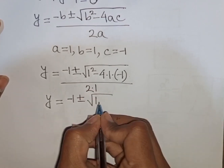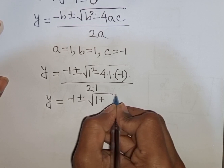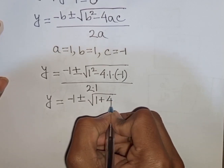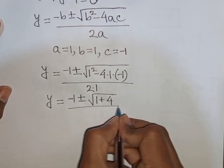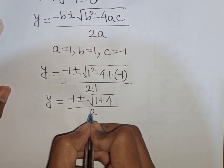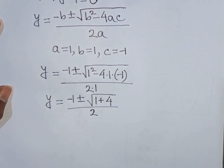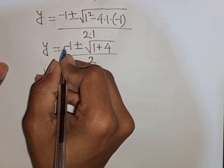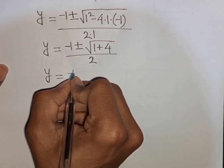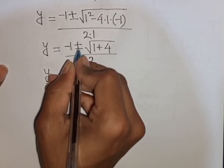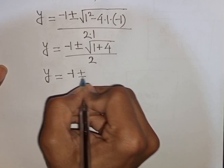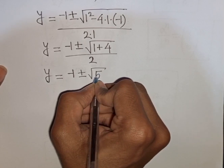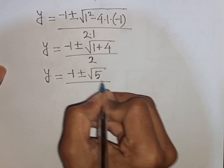So y equals minus 1 plus or minus square root of 1 plus 4, that means square root of 5, divided by 2. Now we see there are two cases: y equals (minus 1 plus square root of 5) divided by 2, or y equals (minus 1 minus square root of 5) divided by 2.